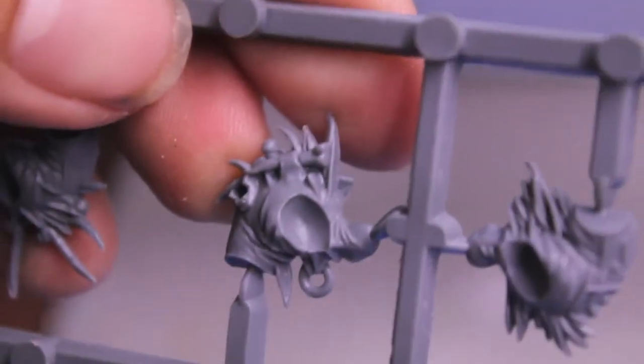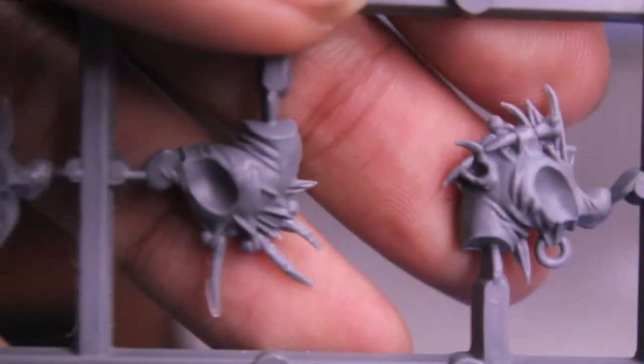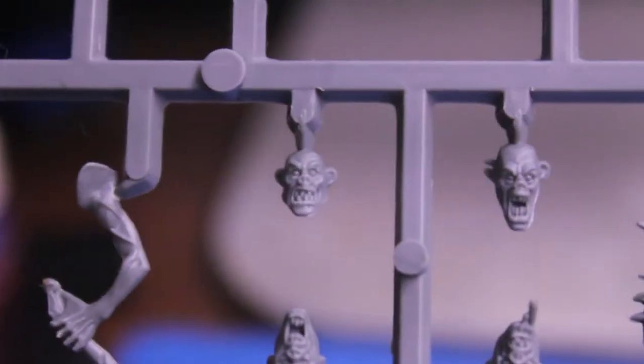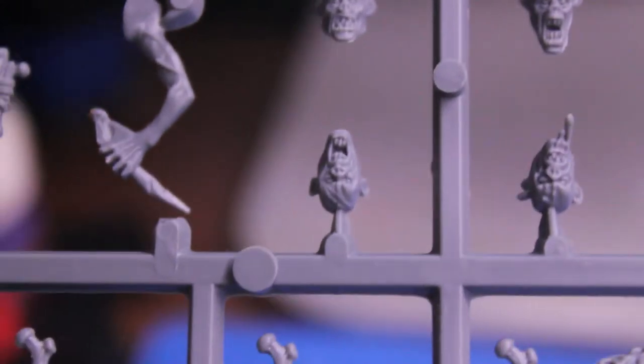So the torsos are all one piece. They don't come in two halves that you have to glue together. You just have to glue the torsos to the legs, the heads to the torsos, and then the arms to the bodies.